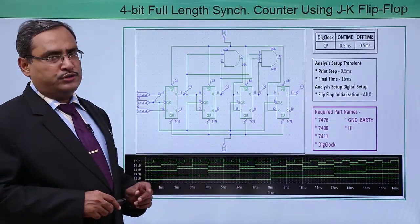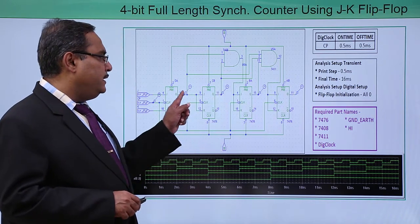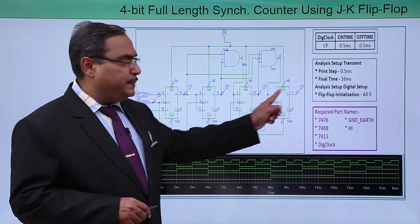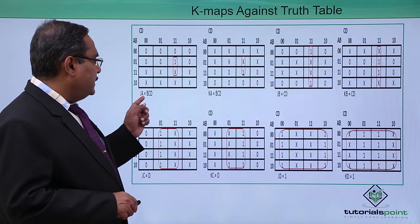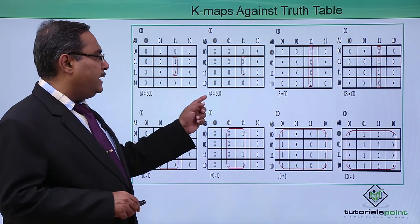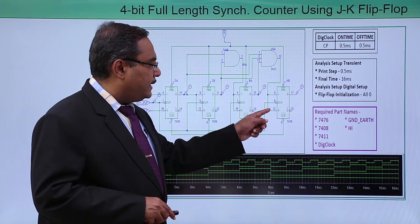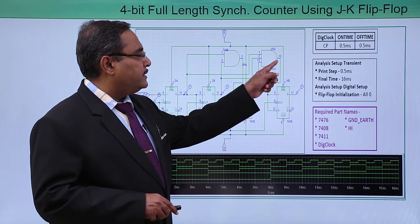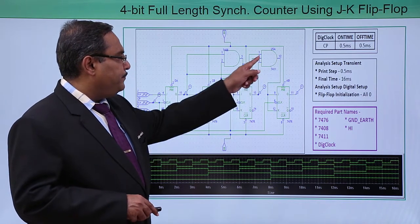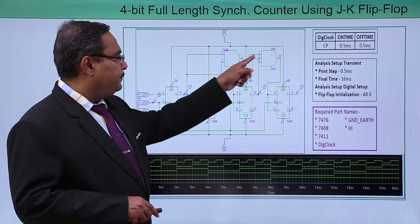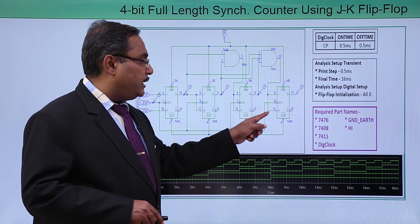Let me do some cross-checks. Here we have A, B, C, D — A is our MSB and D is our LSB. JA is BCD and KA is BCD. We have done the same in the circuit: JA and KA receive the AND-gate output, whose inputs are B, C, and D. So BCD output has been provided to JA and KA.